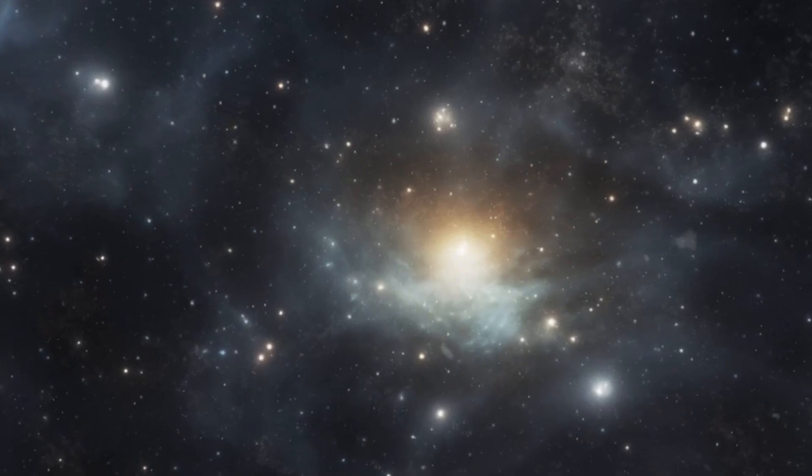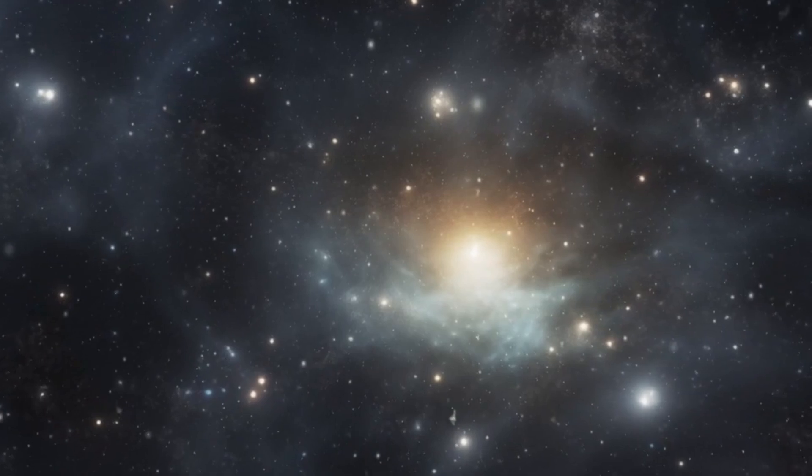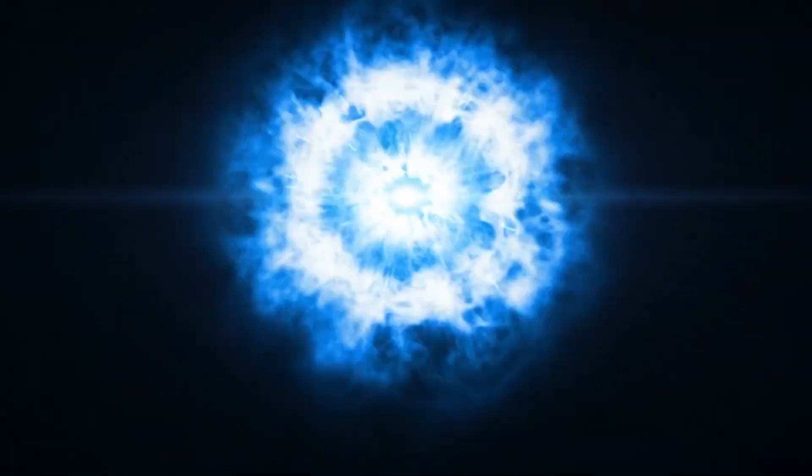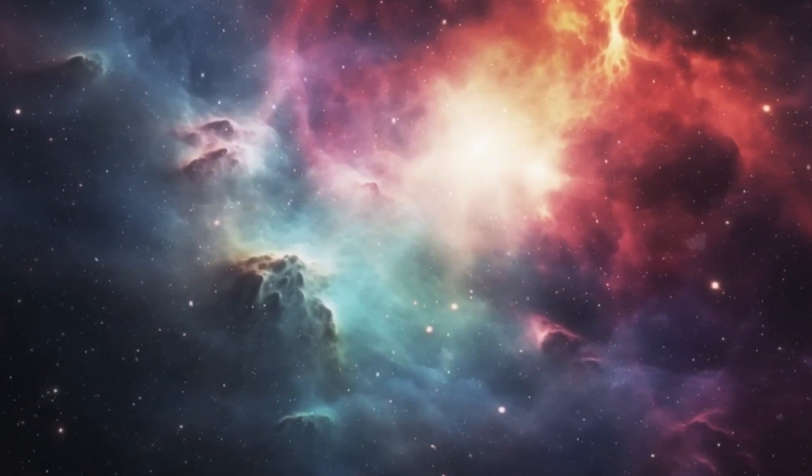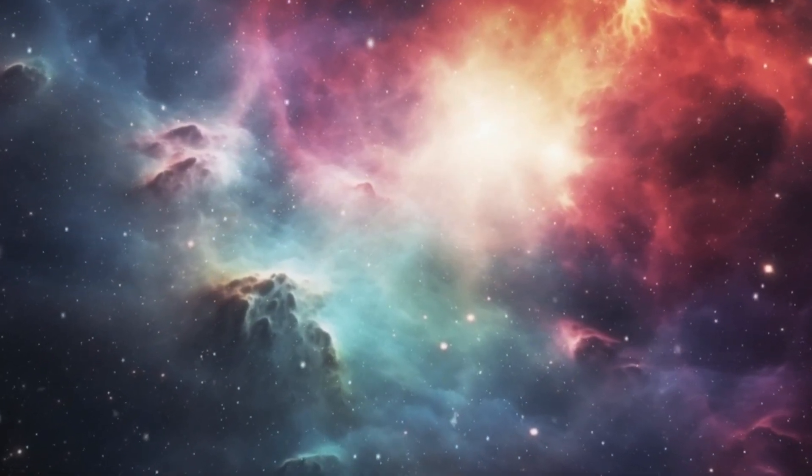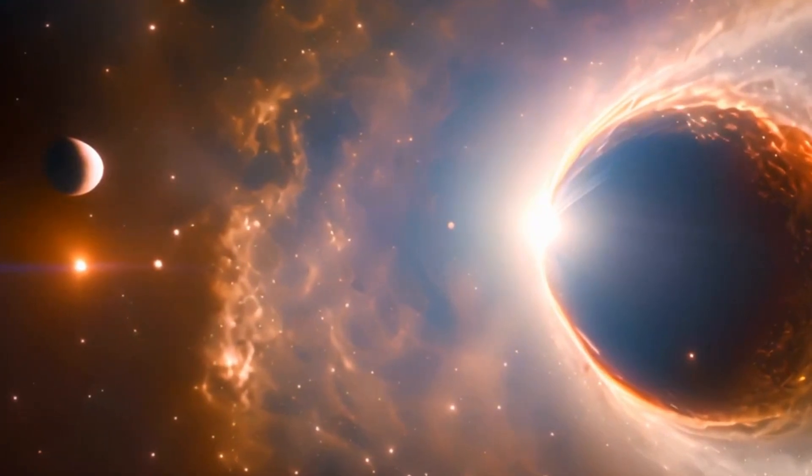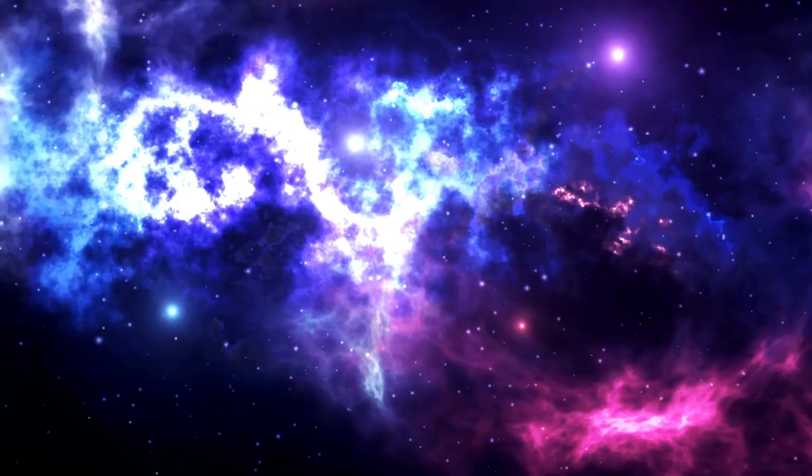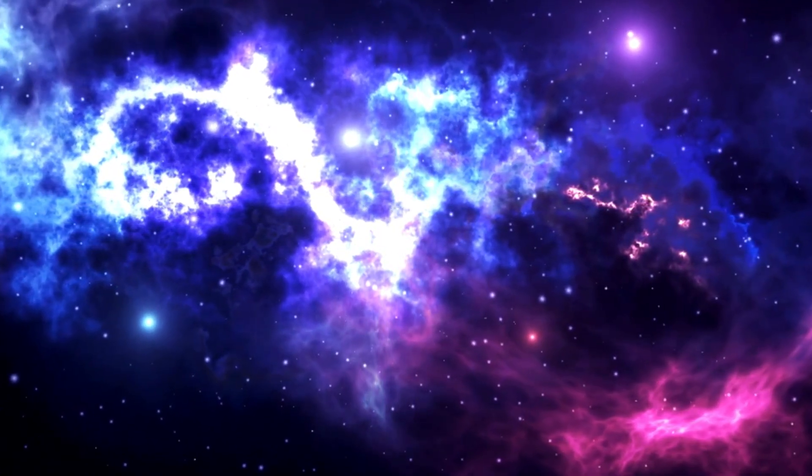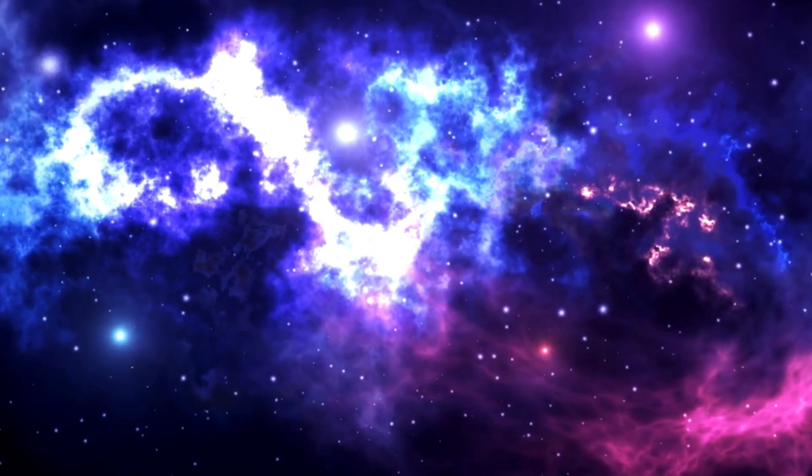This means that the observable universe is essentially a bubble of visibility, determined not only by the speed of light, but also by the age of the universe itself. Scientists estimate that the universe is about 13.8 billion years old. Therefore, we can observe objects that emitted light as far back as 13.8 billion years ago. However, this distance isn't as straightforward as it seems.